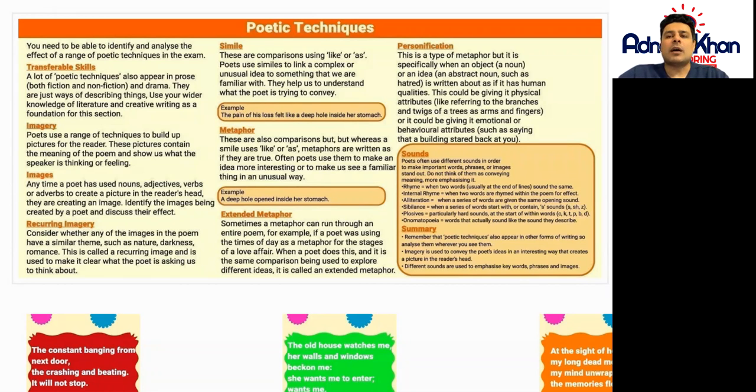Metaphors are also comparisons, but whereas a simile uses 'like' or 'as,' metaphors are written as if they are true. Often poets use them to make an idea more interesting or to make us see a familiar thing in an unusual way. For example, 'a deep hole opened inside her stomach.' A simile will have 'like' and 'as,' whereas metaphors are written as if they are true.